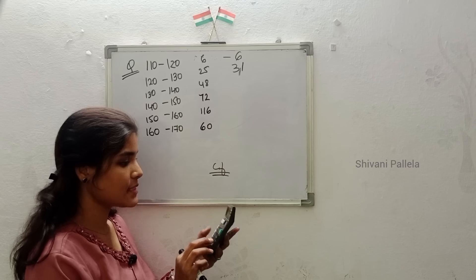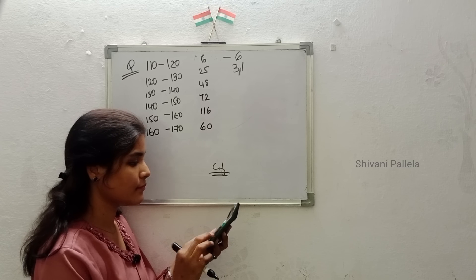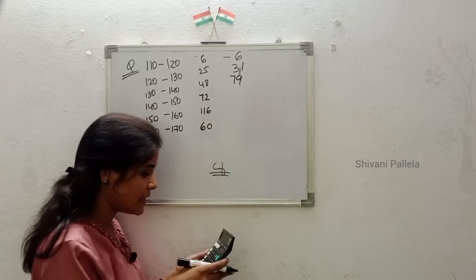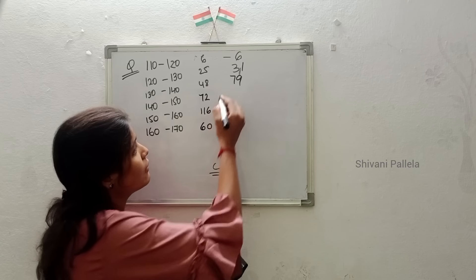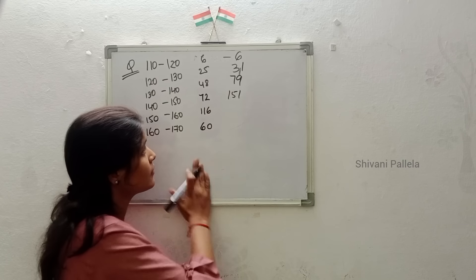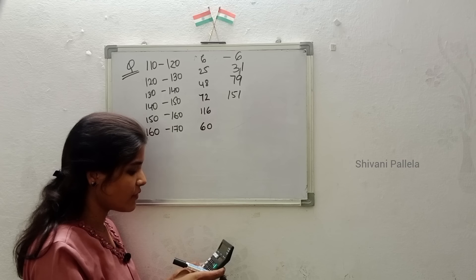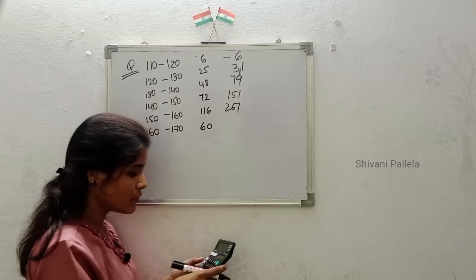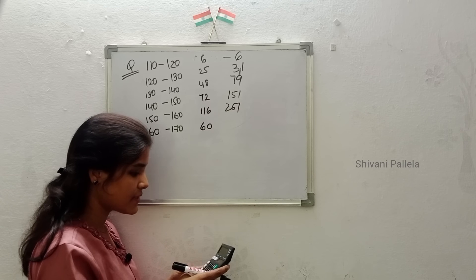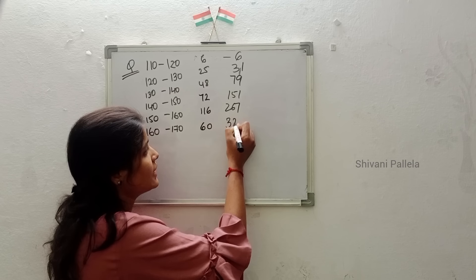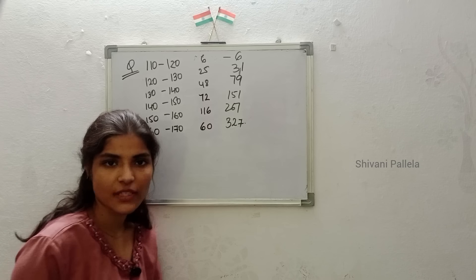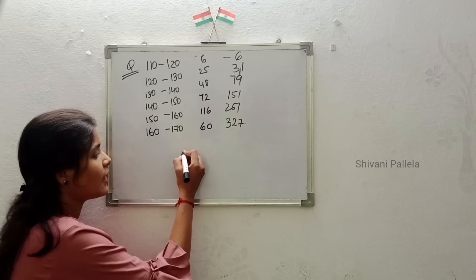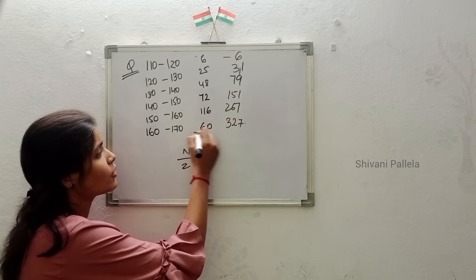Continuing the cumulative frequency: 31 plus 48 equals 79, then 79 plus 72 equals 151, then 151 plus 116 equals 267, then 267 plus 60 — we need this to apply the formula. n means total of all frequencies: 6 plus 25 plus 48 plus 72 plus 116 plus 60.